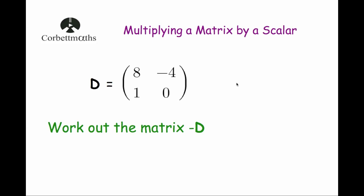Okay, we've got two more examples. Our next example, we've got matrix D which is [8, -4; 1, 0], and we've been asked to find the matrix minus D. Remember in algebra, minus X is the same as minus 1 times X — we just don't write the 1. So minus D is the same as minus 1D, meaning we multiply all elements by minus 1.